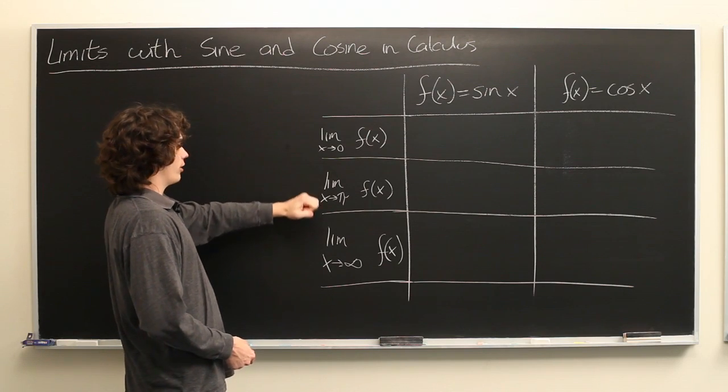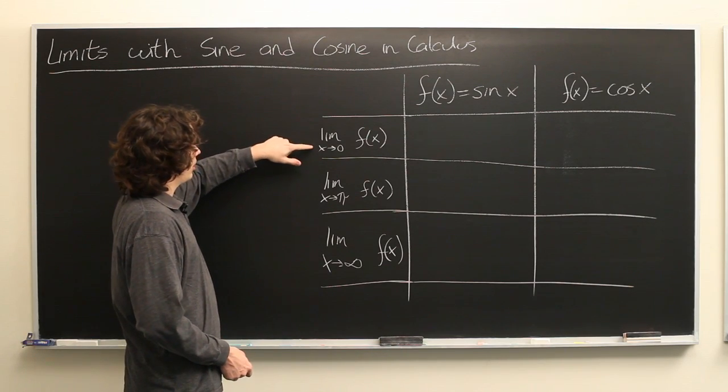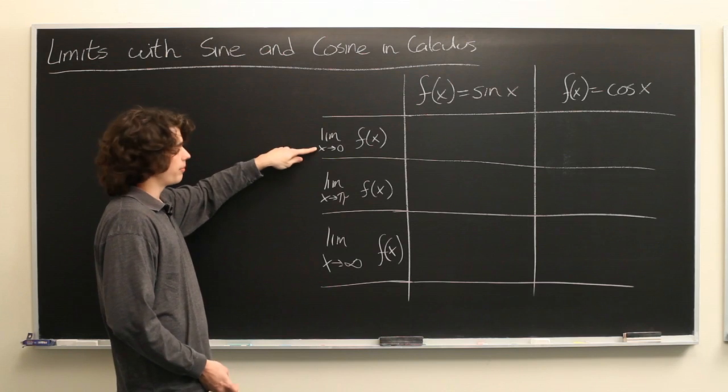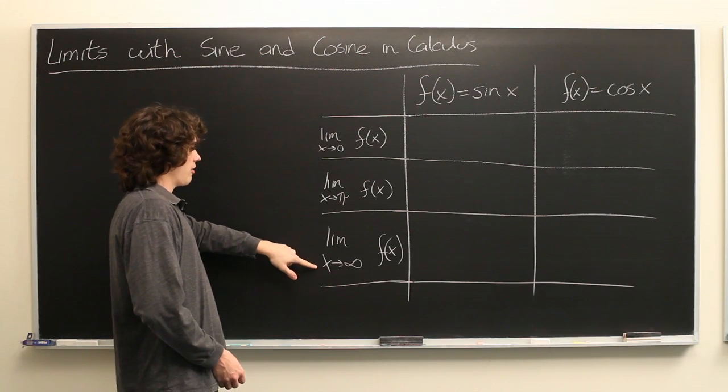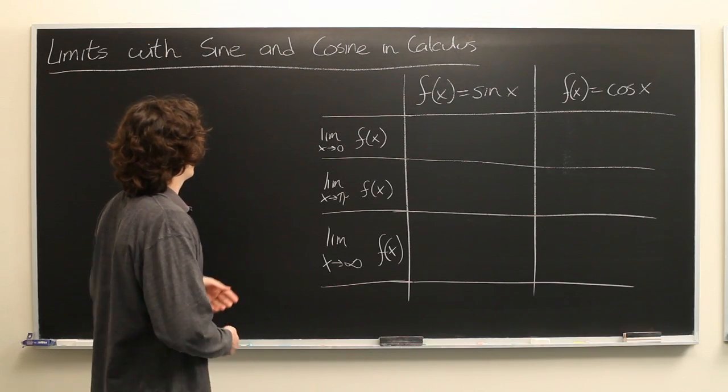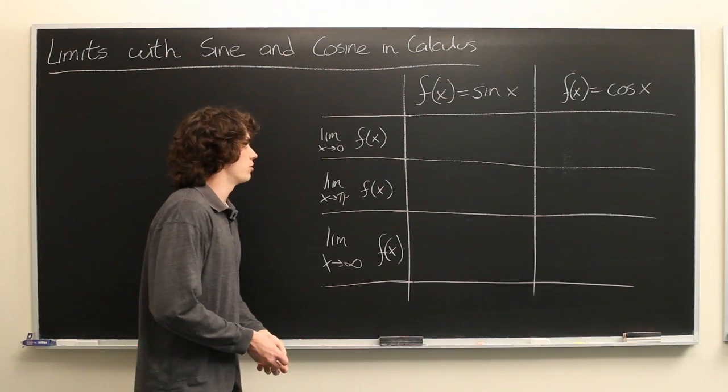And we're going to look at these three limits: the limit as x goes to 0 of f, the limit as x goes to pi, and the limit as x goes to infinity. We'll start with this one, limit as x goes to 0.